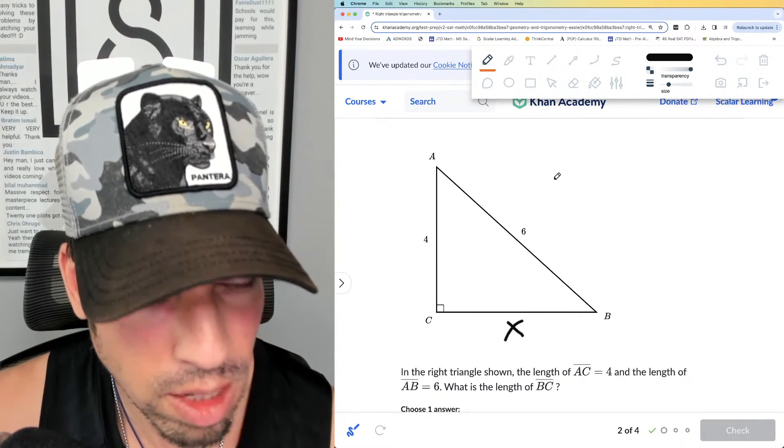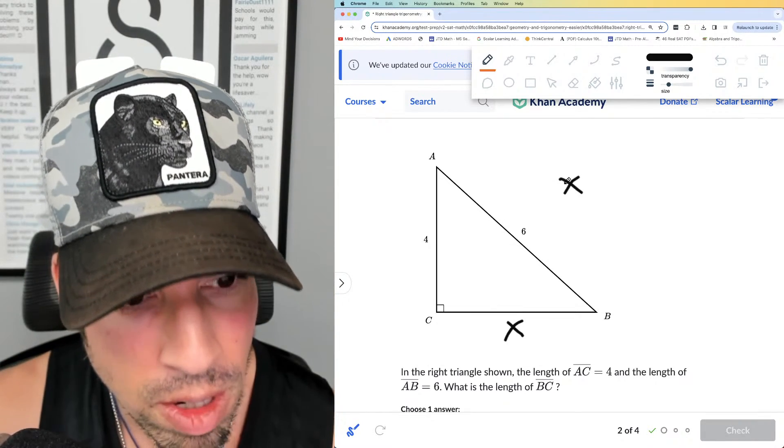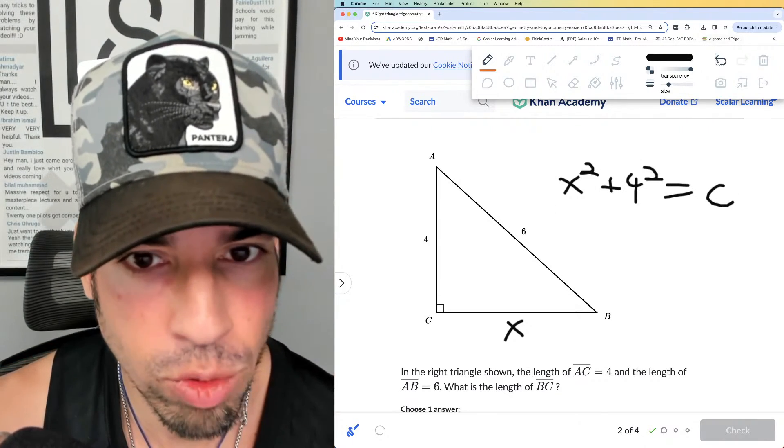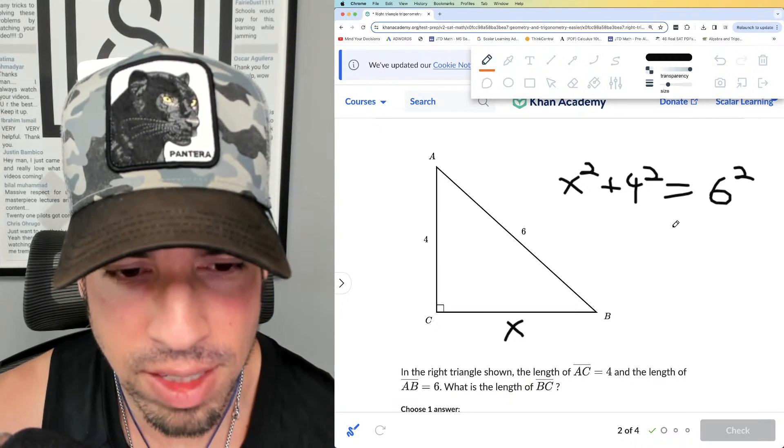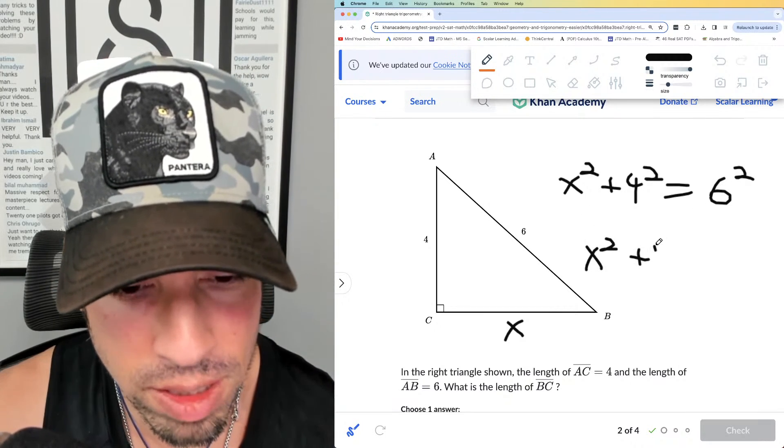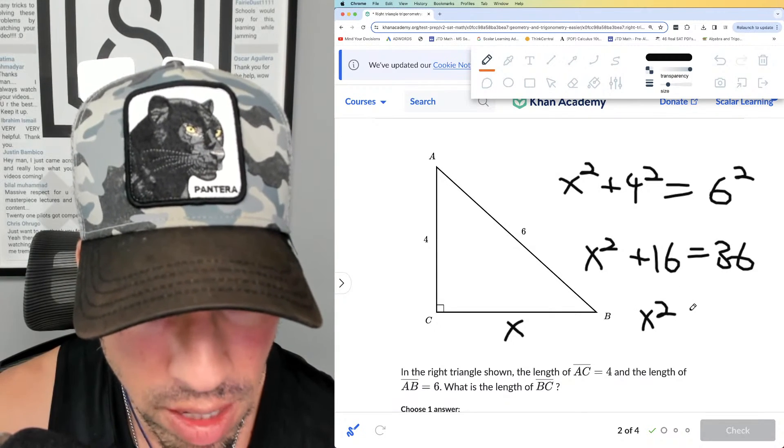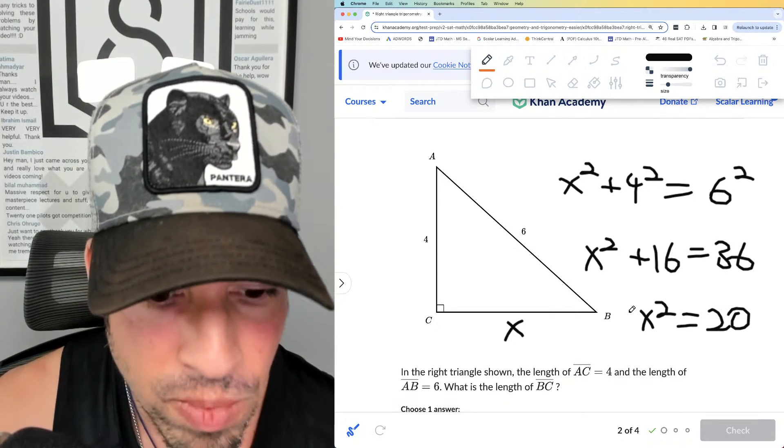Let's use Pythagorean theorem: leg squared plus the other leg squared is equal to c squared, or the hypotenuse squared, which in this case is 6. That's x² + 16 = 36. Subtract 16 from both sides, x² = 20.